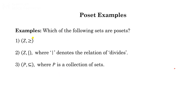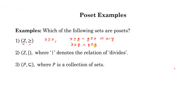Now some examples: which of the following sets are posets? First, the set of integers Z with the relation ≥. This is reflexive since for all x, x ≥ x. It is antisymmetric since if x ≥ y and y ≥ x then x = y. It is transitive since if x ≥ y and y ≥ z then x ≥ z. It satisfies all three conditions, so (Z, ≥) is a poset.